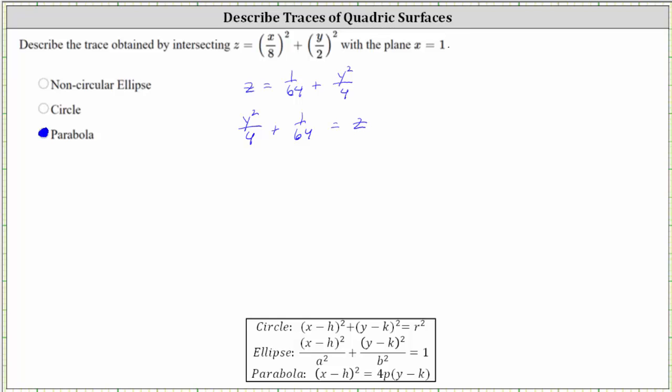And now let's subtract 1/64 on both sides, which gives us y squared divided by 4 is equal to z minus 1/64.